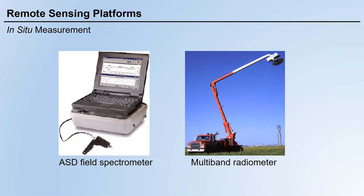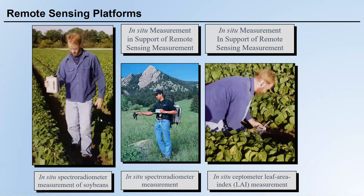On the right side, the idea is the same, but this time the sensor is held by a crane or a truck. You can detect a larger area because the sensor is obviously higher than a handheld sensor as shown in the left figure. There are more examples of how to use handheld equipment for in-situ measurements.